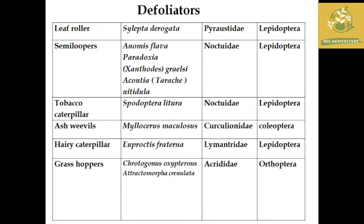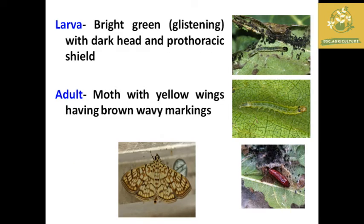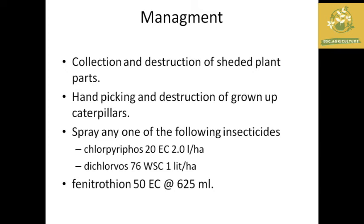For defoliators, the common name, scientific name, family and order are given in the table. The first defoliator is the leaf roller. The symptom of damage is forming a trumpet shape by fastening leaf margins with silken threads. Feeding occurs on the marginal portion of leaves, and heavy attack causes defoliation. The larva is bright green with a dark head and the adult is a moth with yellow wings having brown patches and veiny margins. Management includes collection and destruction of rolled plant parts, hand picking of caterpillars, and chemical sprays like chlorpyrifos, fenitrothion or dichlorvos.